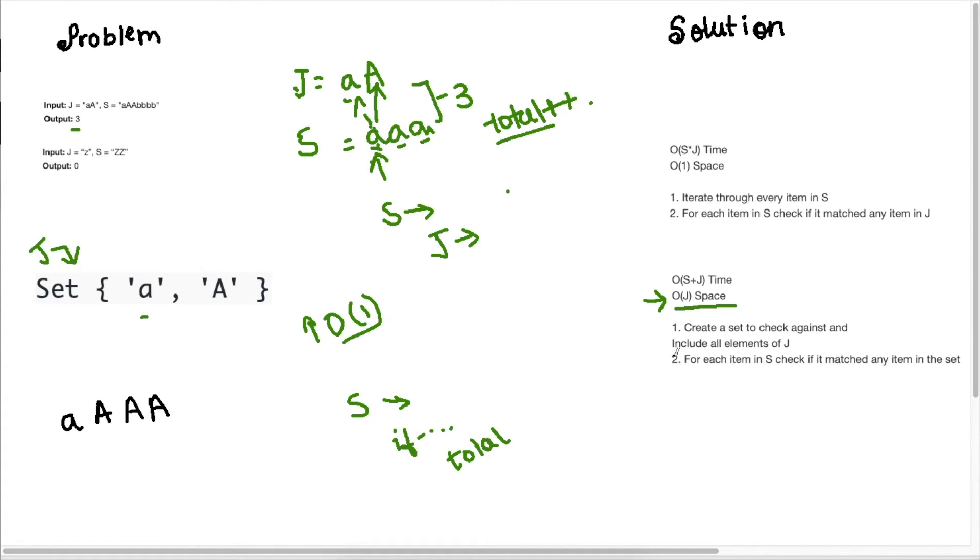So to review the solution, we need to create a set to check against all the elements, and then what we need to do is iterate through all items in S. And if it is in the set, we just add to our total frequency. So we can see that in our optimized solution, our time complexity is reduced to S plus J, and that's because we need to put all our J elements into the set, and then we will send each element in S and check if that element exists in the set or not. And since the lookup time is O(1), this reduces our time complexity to O(S plus J), so that's what our optimized time complexity is for this problem.